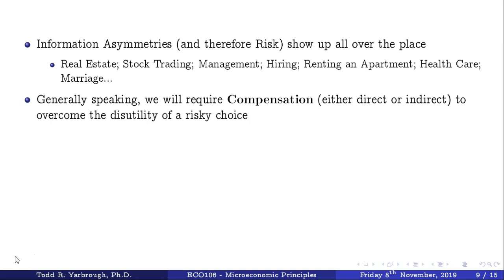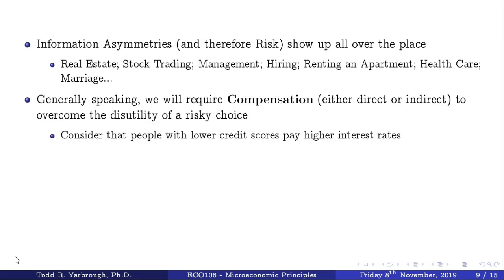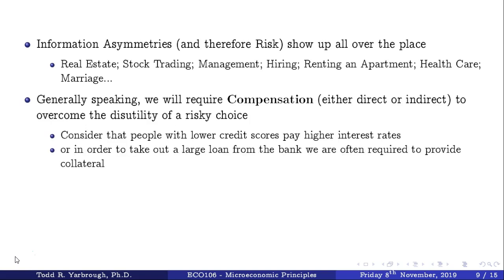This is why you see credit card companies require credit screenings and charge lower credit score individuals higher interest rates—to compensate for the higher risk that the person may not pay their bills. If you take out a large loan from a bank, they often require you to put up collateral, usually an asset or motor vehicle, so that even if you don't pay back the loan, the bank can take your collateral. The more collateral banks require, the less risk they incur, because someone who has collateral is more likely to pay back the loan. Collateral becomes the compensatory mechanism banks use to screen out bad borrowers.